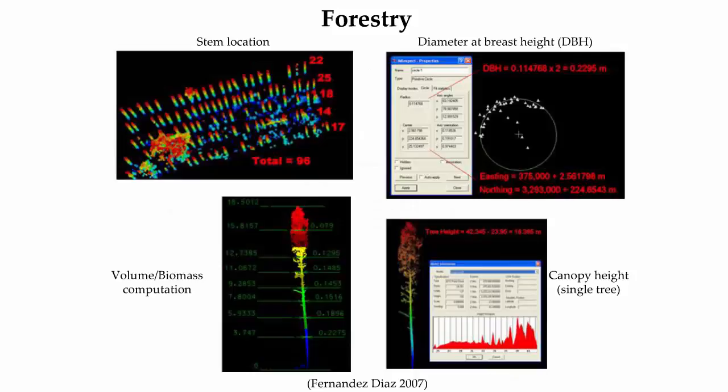There are a multitude of forest inventory parameters that can be measured from both terrestrial and airborne LiDAR point clouds, including stem locations as shown in the upper left image, diameter at breast height as shown in the upper right image, biomass and carbon parameters as shown in the lower left image, canopy height as shown in the lower right image, length of live crown, and canopy cover enclosure.